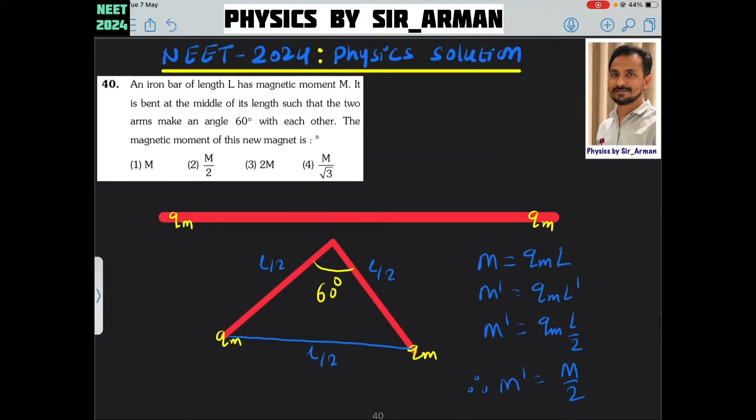Question number 40. An iron bar of length L has magnetic moment M, is bent at the middle.